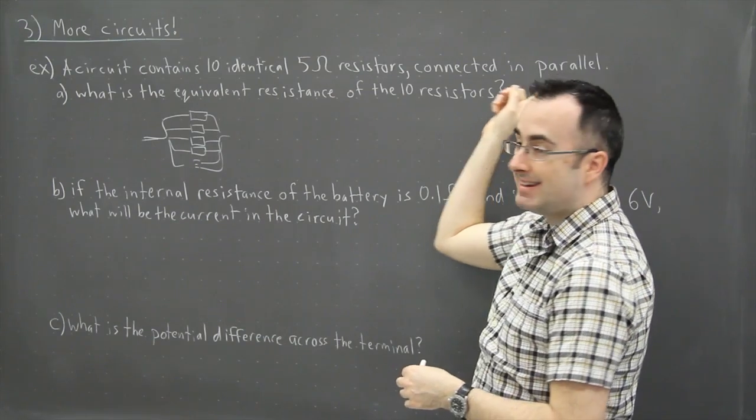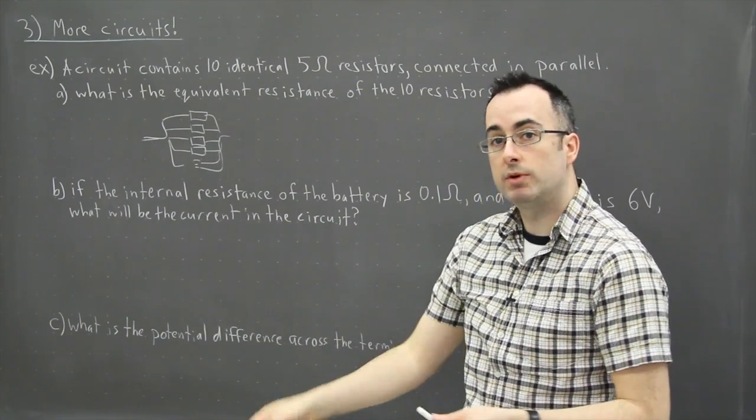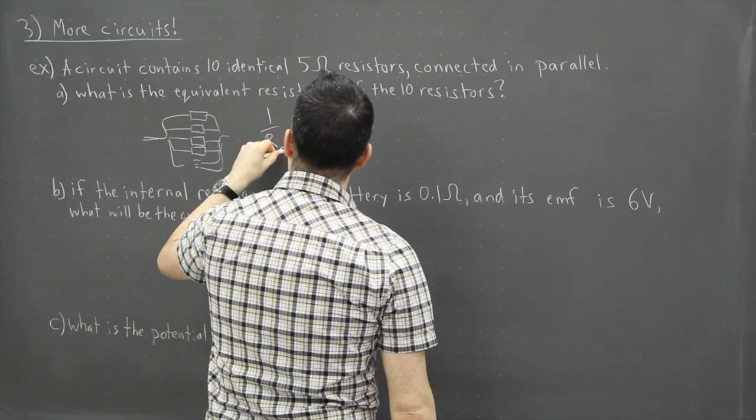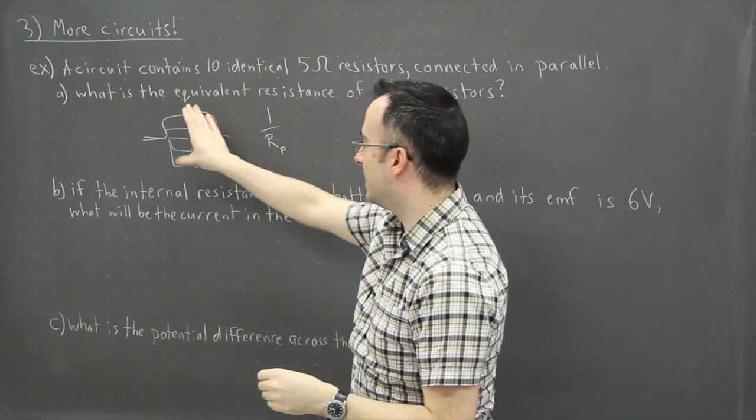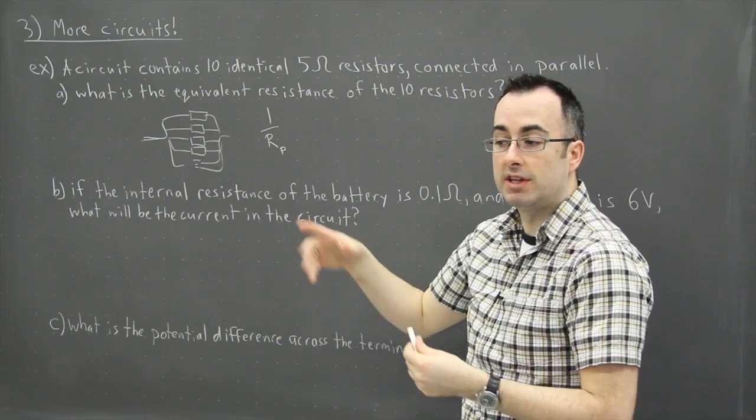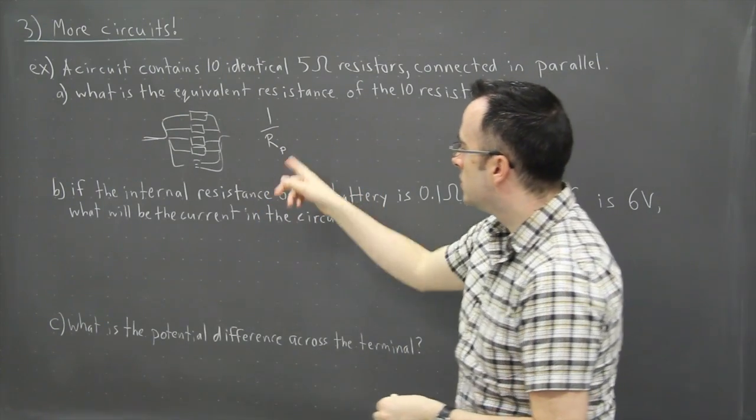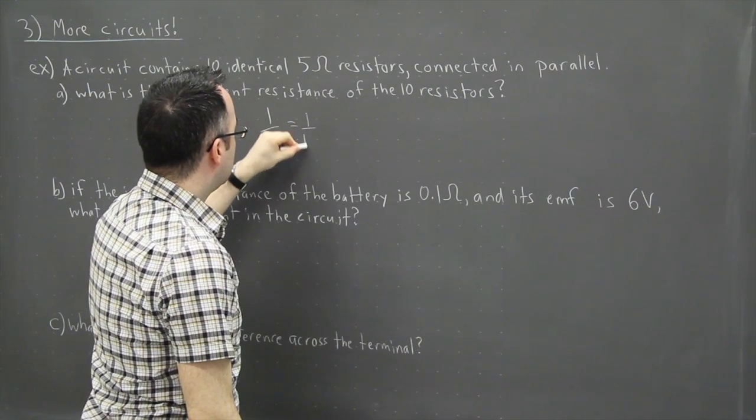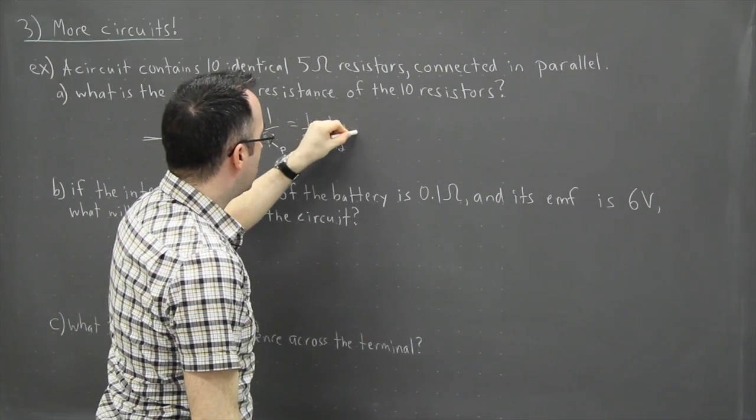Now since they're measured in or connected in parallel, that means that we can use our rule for parallel resistors, which says that 1 over R, now I'm going to put a little P here to mean parallel, because we're going to redraw this as just one resistor. I like to put a little P just to remind myself, this isn't really a resistor that's sitting in there, it's an equivalent resistor. So the equation goes 1 over Rp equals 1 over R1 plus 1 over R2 plus dot dot dot.